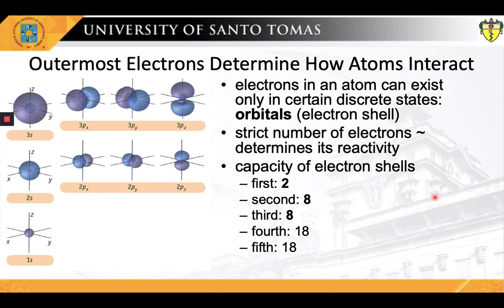This outermost shell is known as the valence shell, and the electrons found in it are called valence electrons. In general, atoms are most stable and least reactive when their outermost electron shell is full. Most of the elements important in biology need eight electrons in their outermost shell in order to be stable — this rule of thumb is known as the octet rule. Some atoms can be stable with an octet even though their valence shell is the 3n shell, which can hold up to 18 electrons.